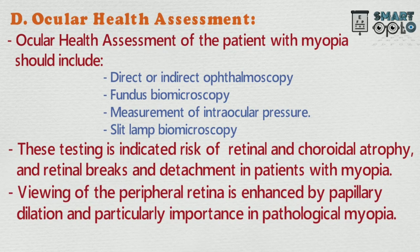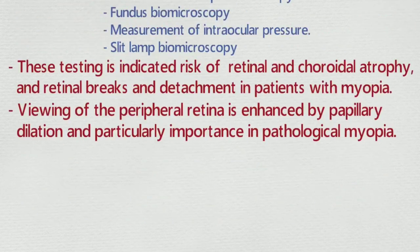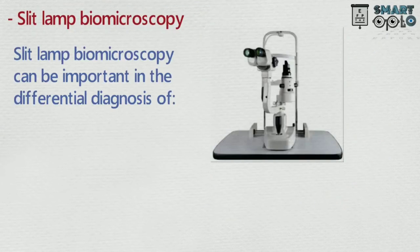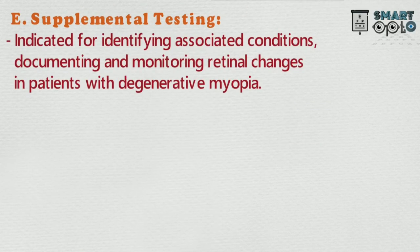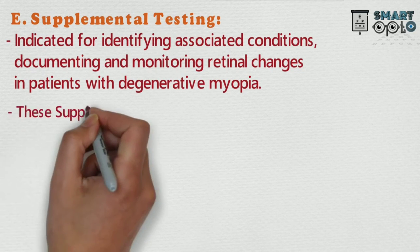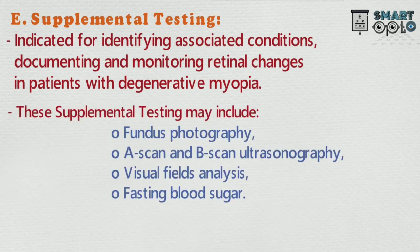Viewing of the peripheral retina is enhanced by pupillary dilation and is particularly important in pathological myopia. Slit-lamp biomicroscopy can be important in the differential diagnosis of induced or acquired myopia, contact lens-induced corneal edema, and lenticular nuclear sclerosis. E. Supplemental testing: indicated for identifying associated conditions, documenting, and monitoring retinal changes in patients with degenerative myopia. This supplemental testing may include fundus photography, A-scan or B-scan ultrasonography, visual field analysis, and fasting blood sugar.